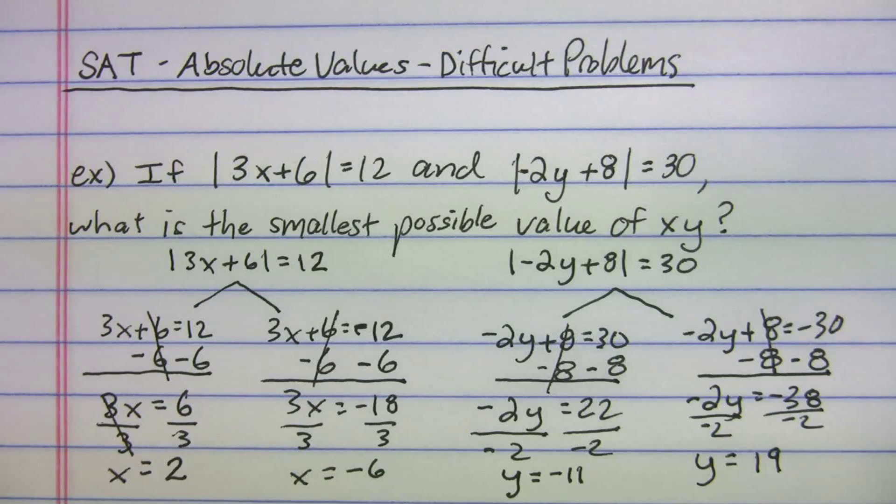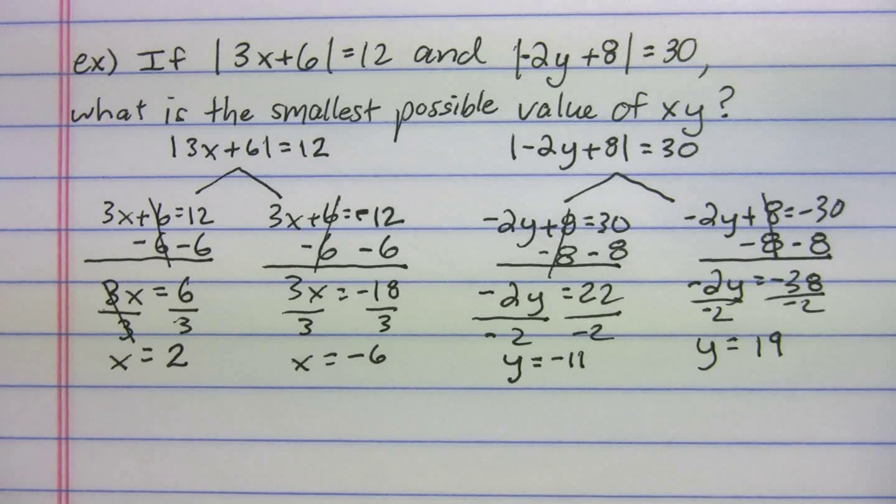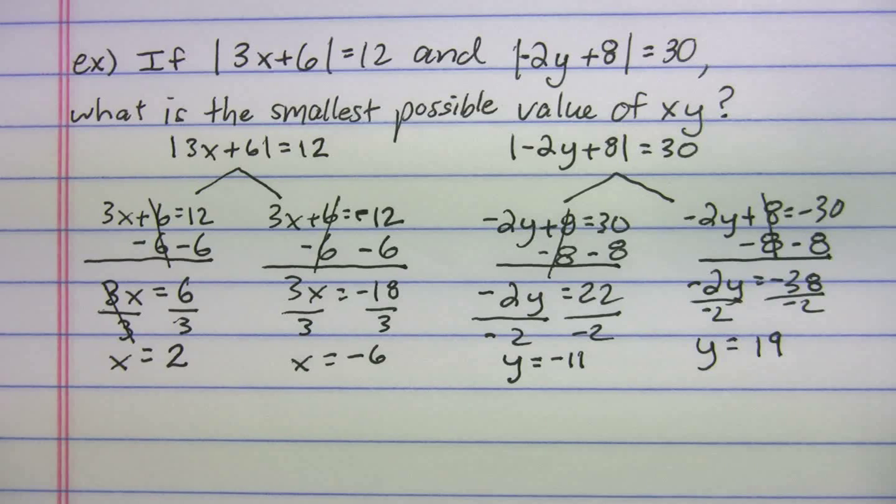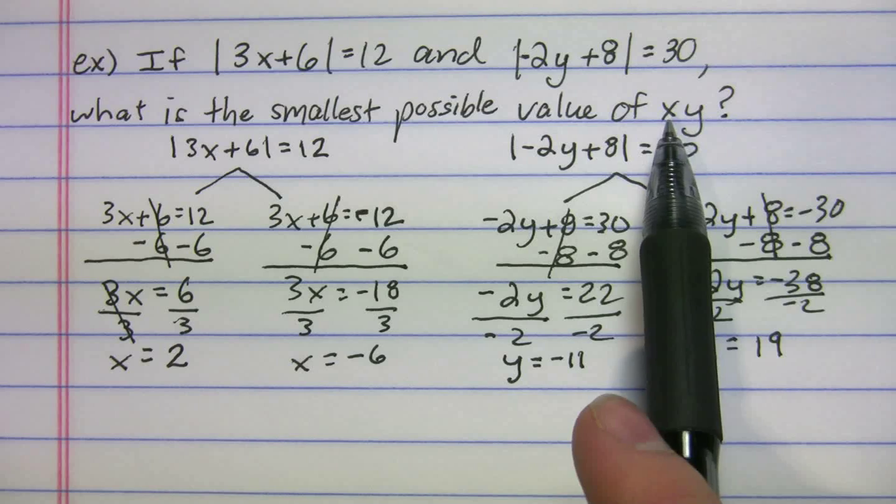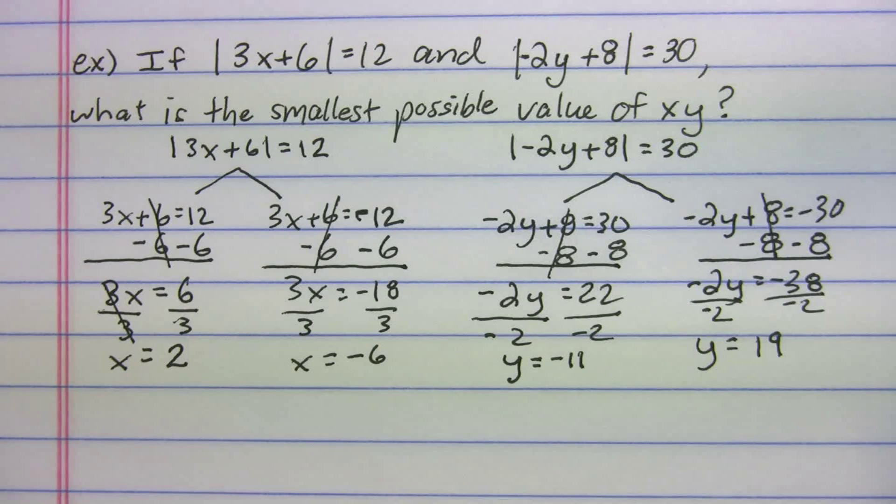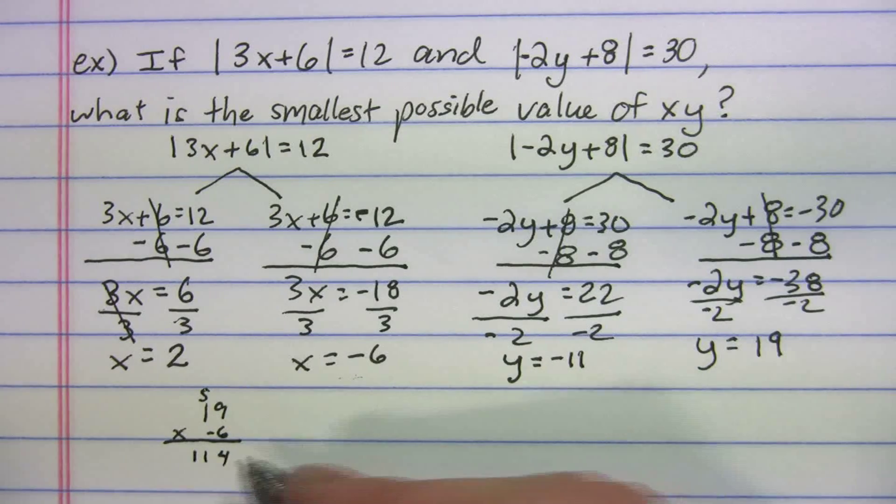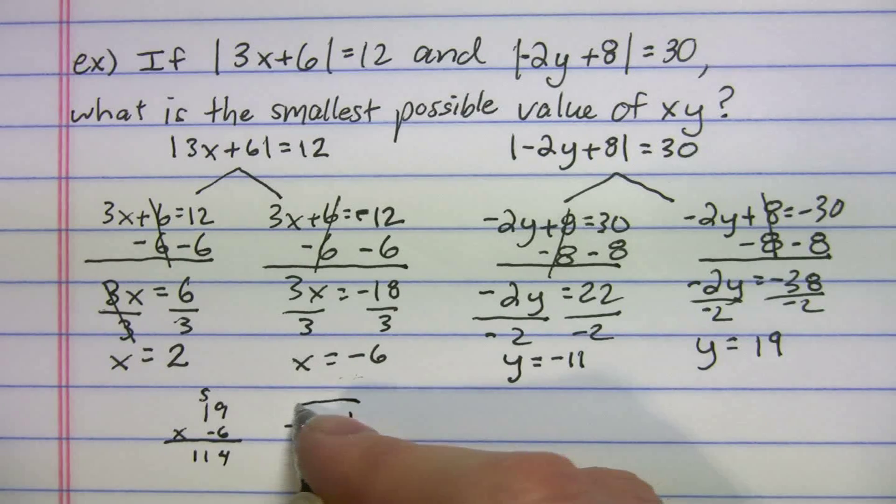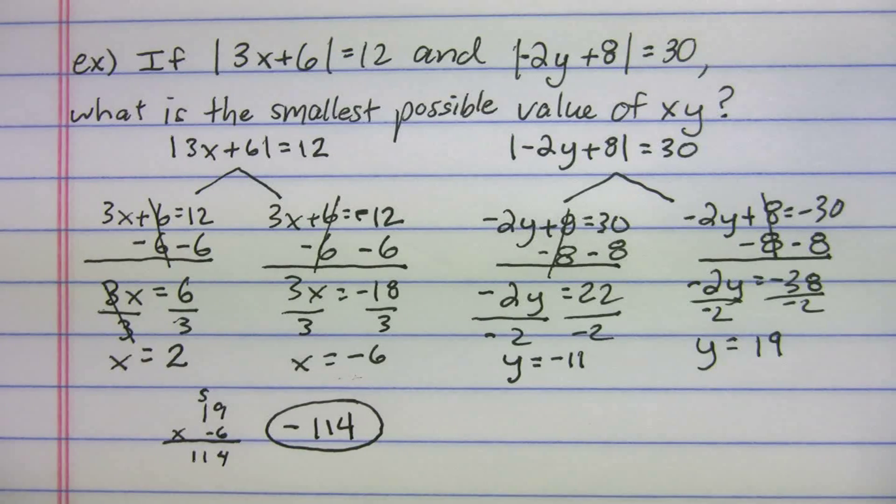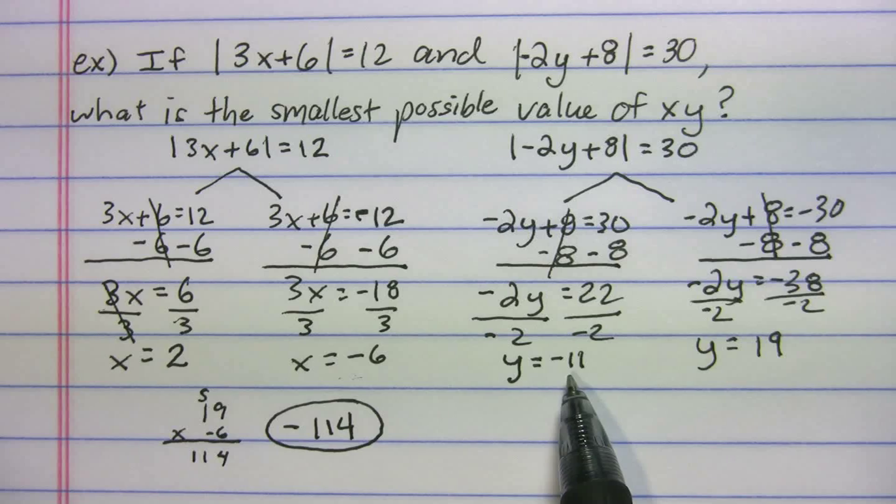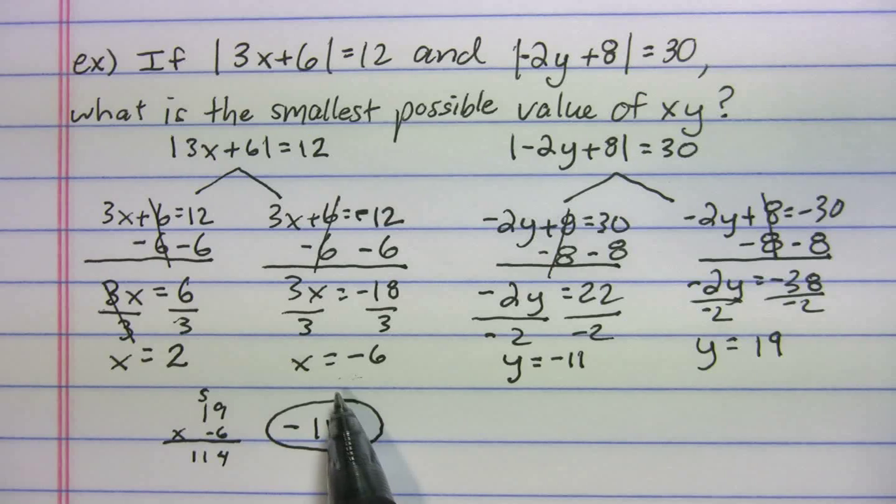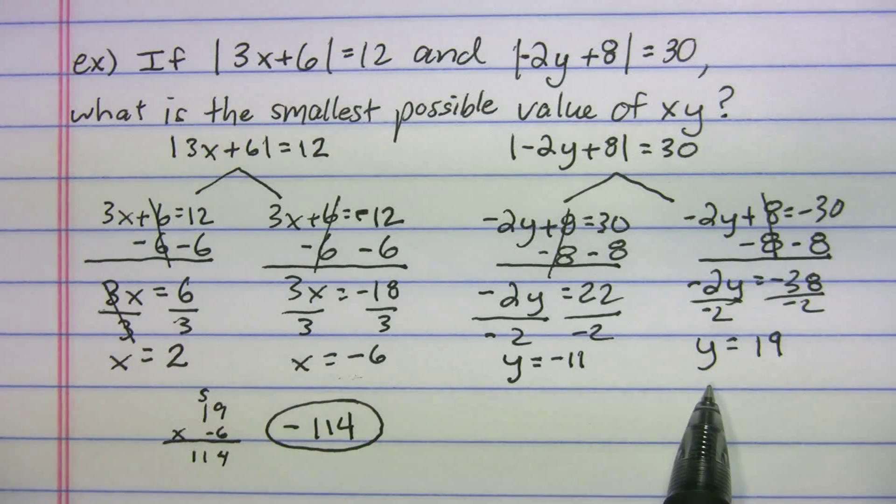So now that we have all our values for x and y, it wants to know what is the smallest possible value of xy. So if we want the smallest possible value, we've got to make it the most negative. Well, we have a value of x of negative 6 and y of 19. So that's going to give us the most negative. 19 times negative 6 gives us negative 114, and that's going to be the answer because you can't get anything less than that.